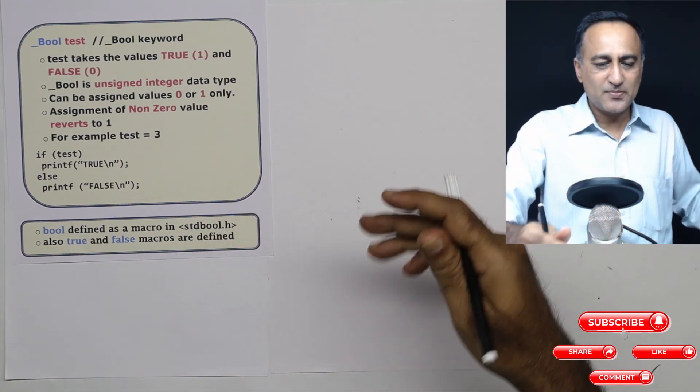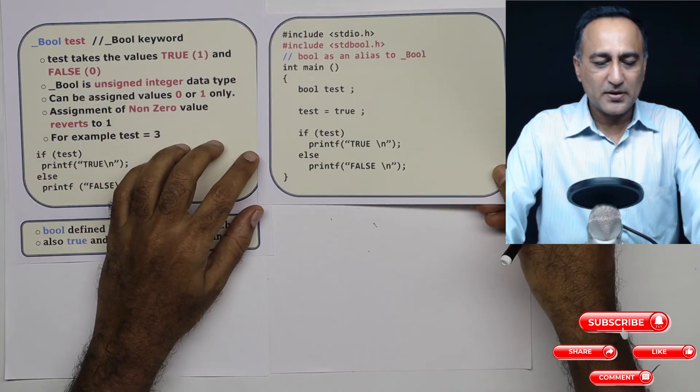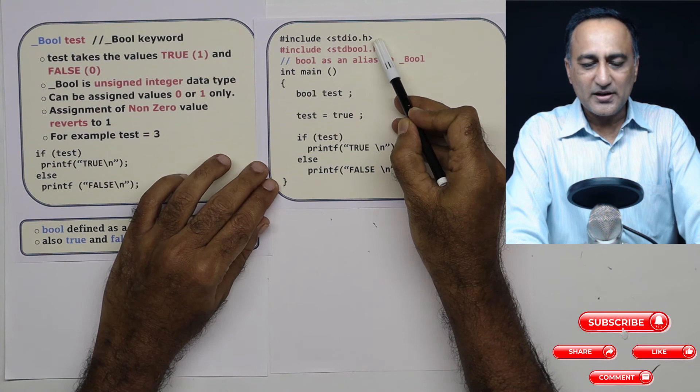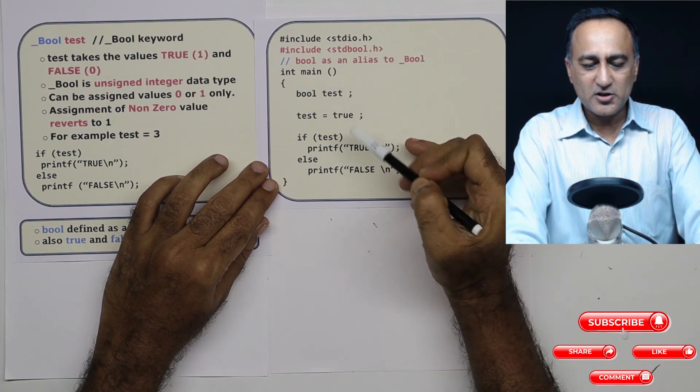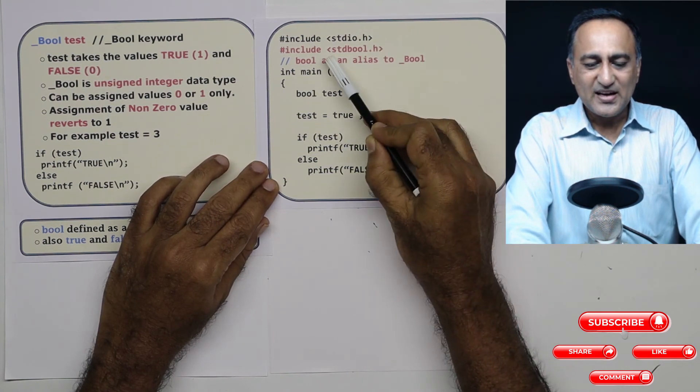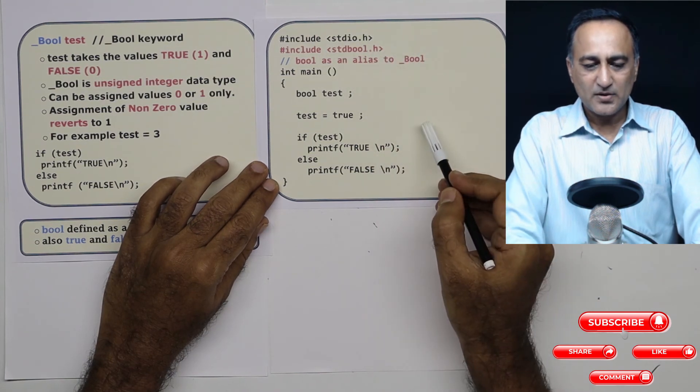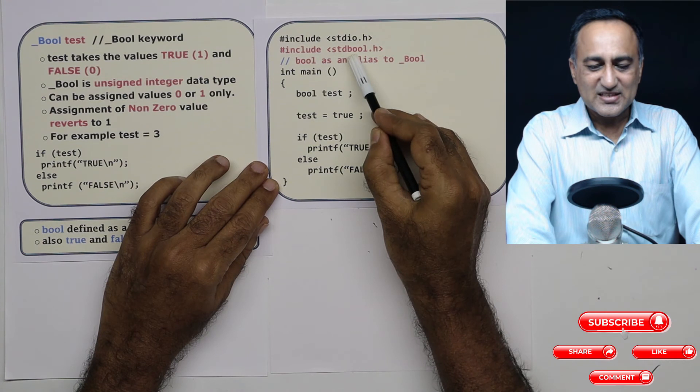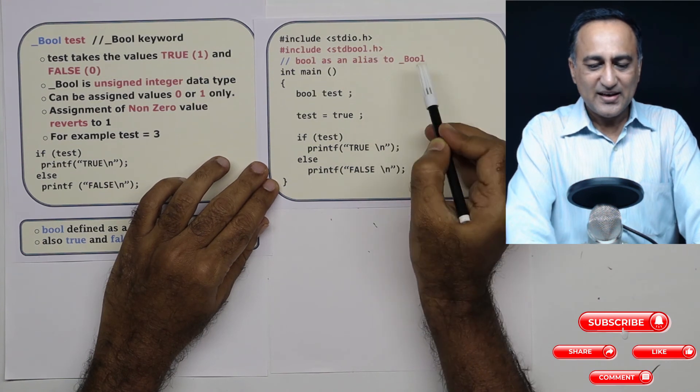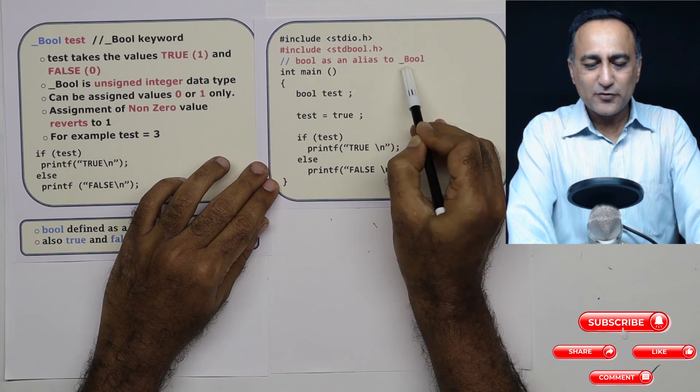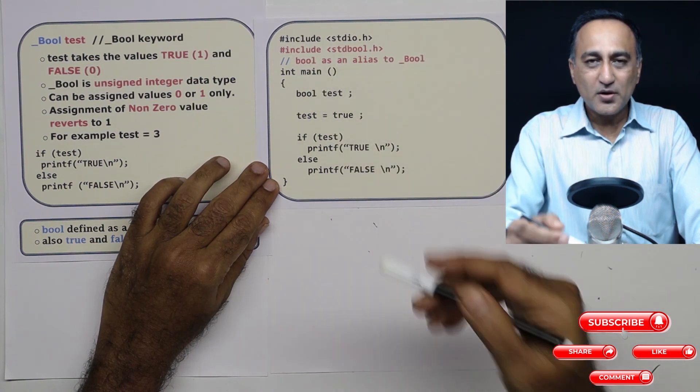So here what I am doing is I have included the header file called standard bool.h. Because I'm going to print, then I have included a header file called standard bool.h. What it does in this standard bool.h is it renames bool or it declares an alias for underscore _Bool as bool.